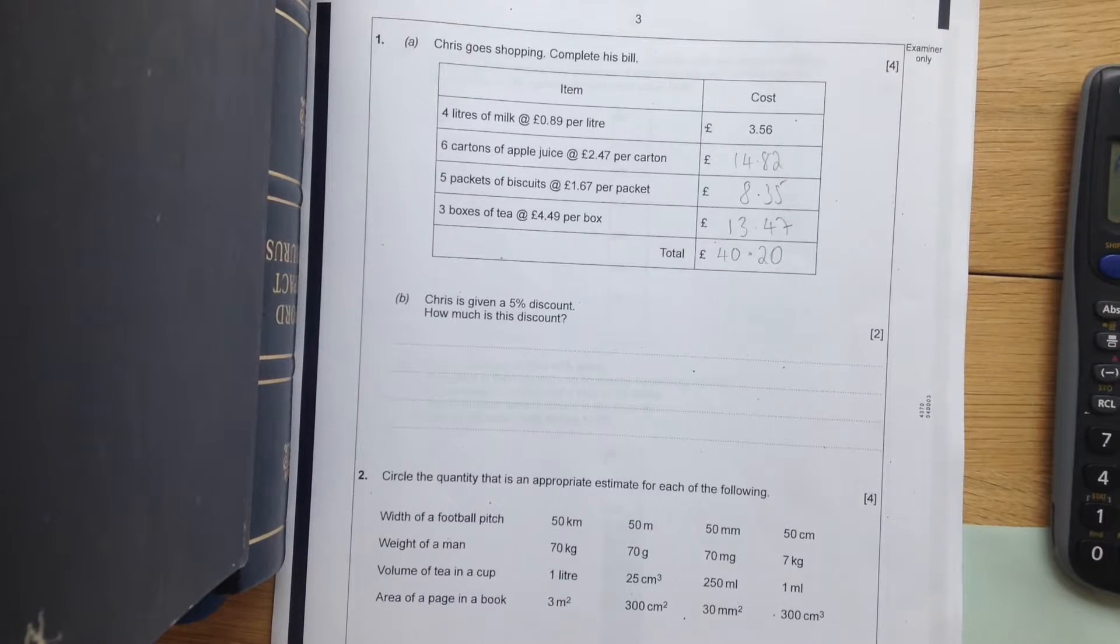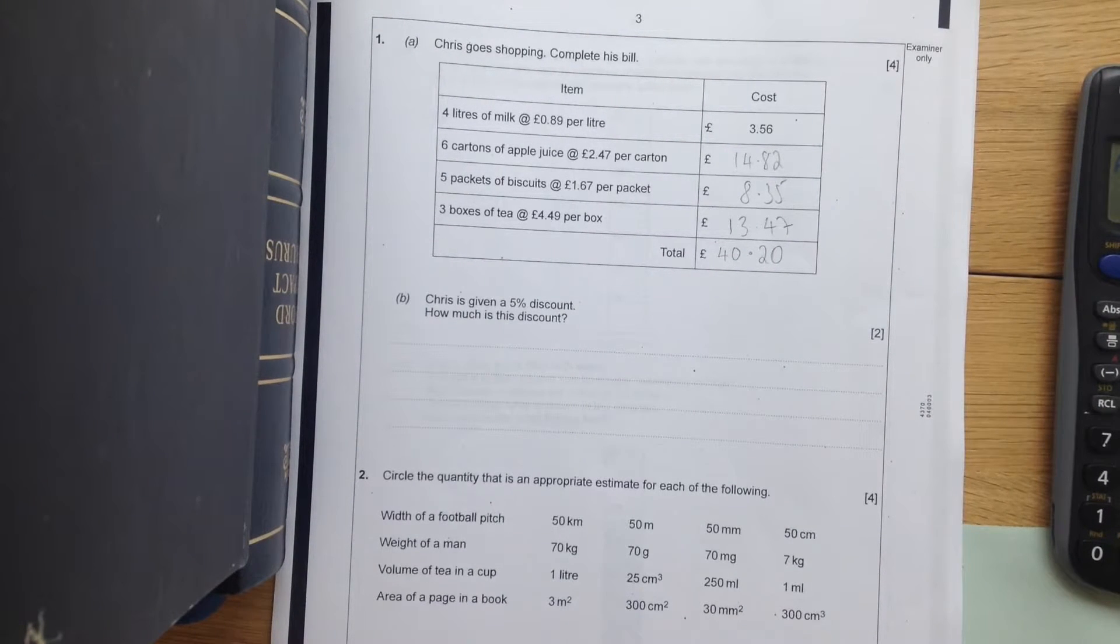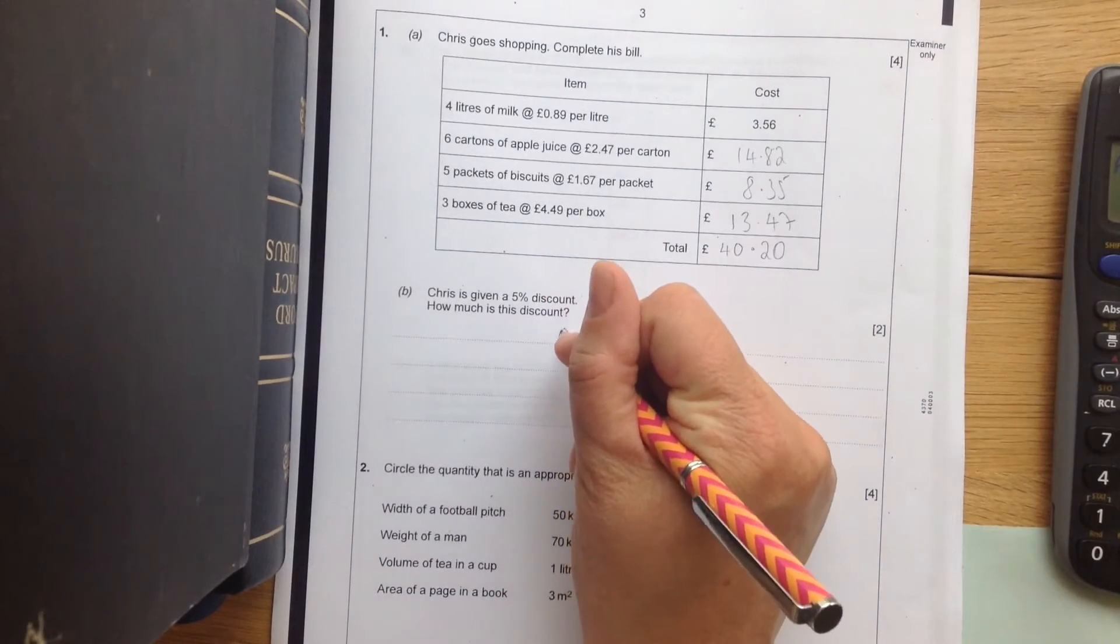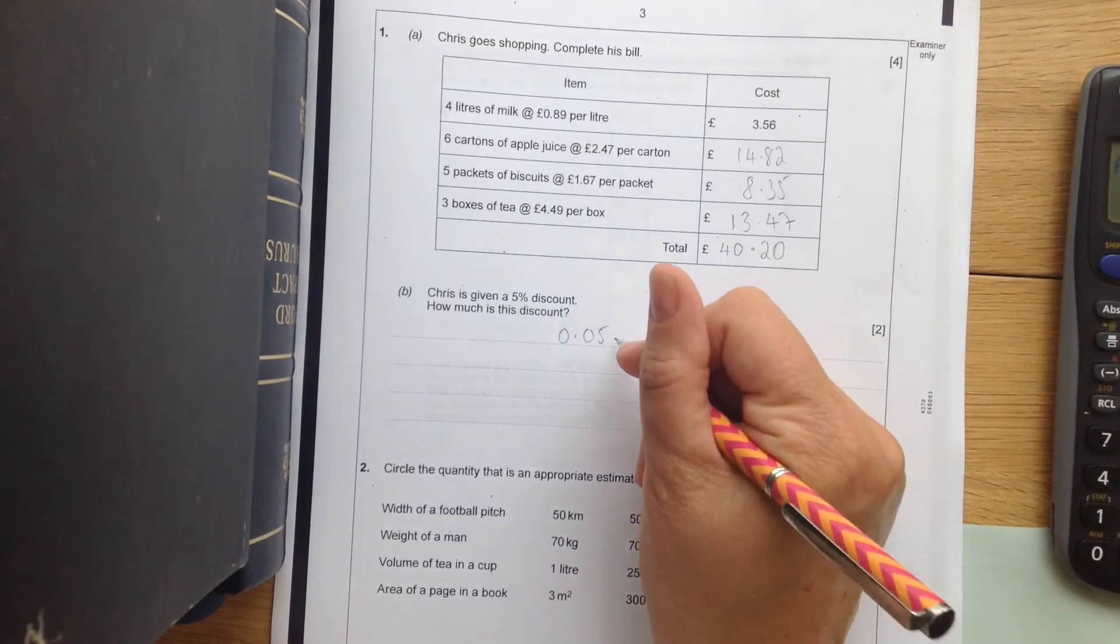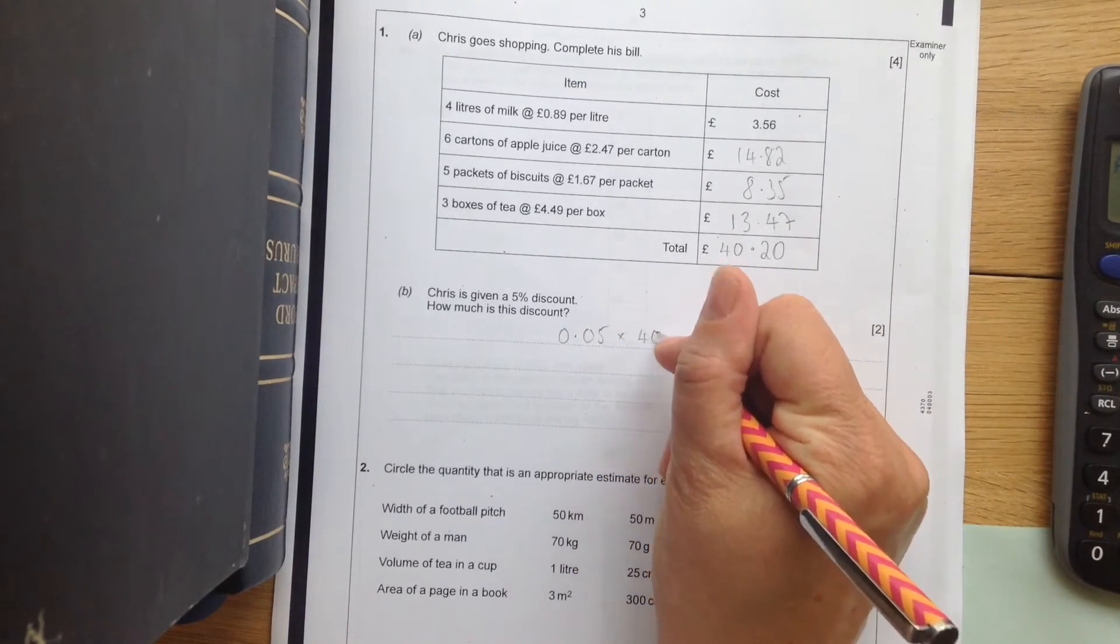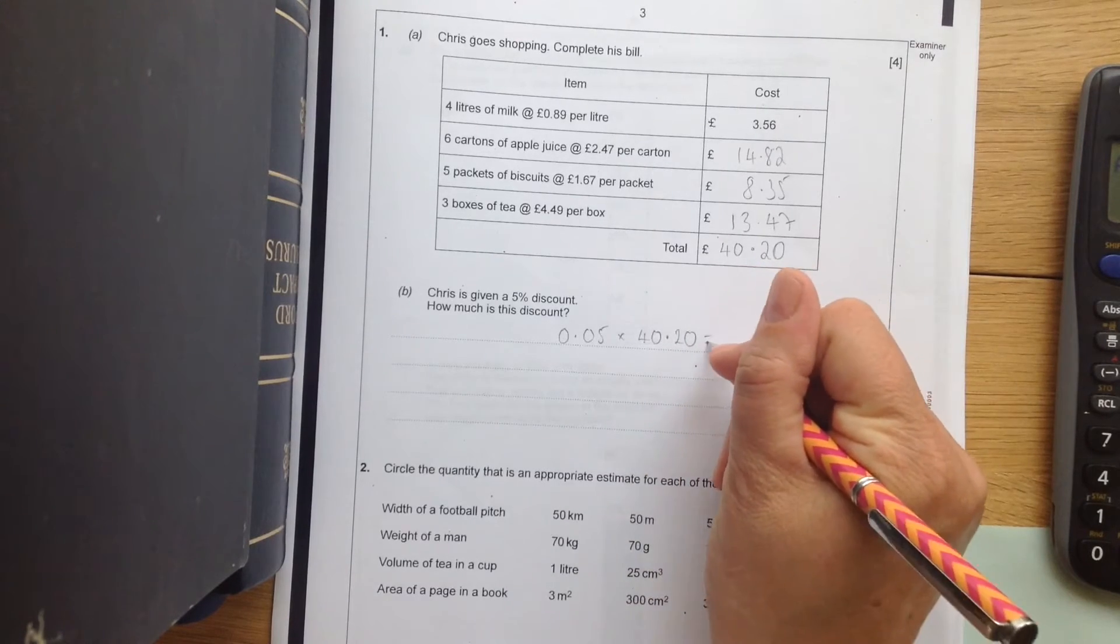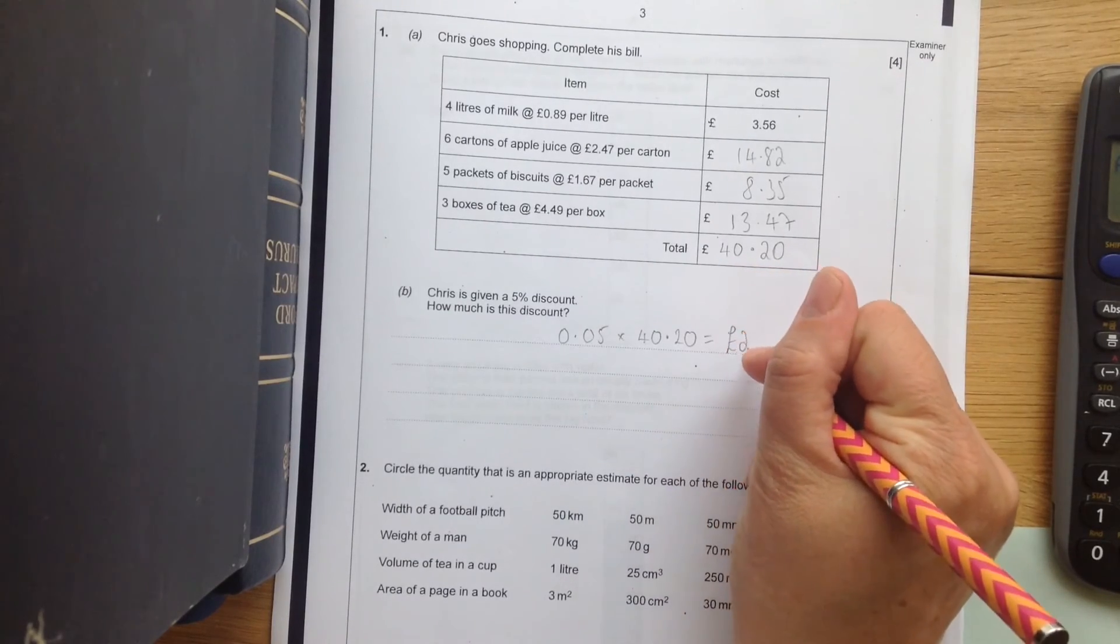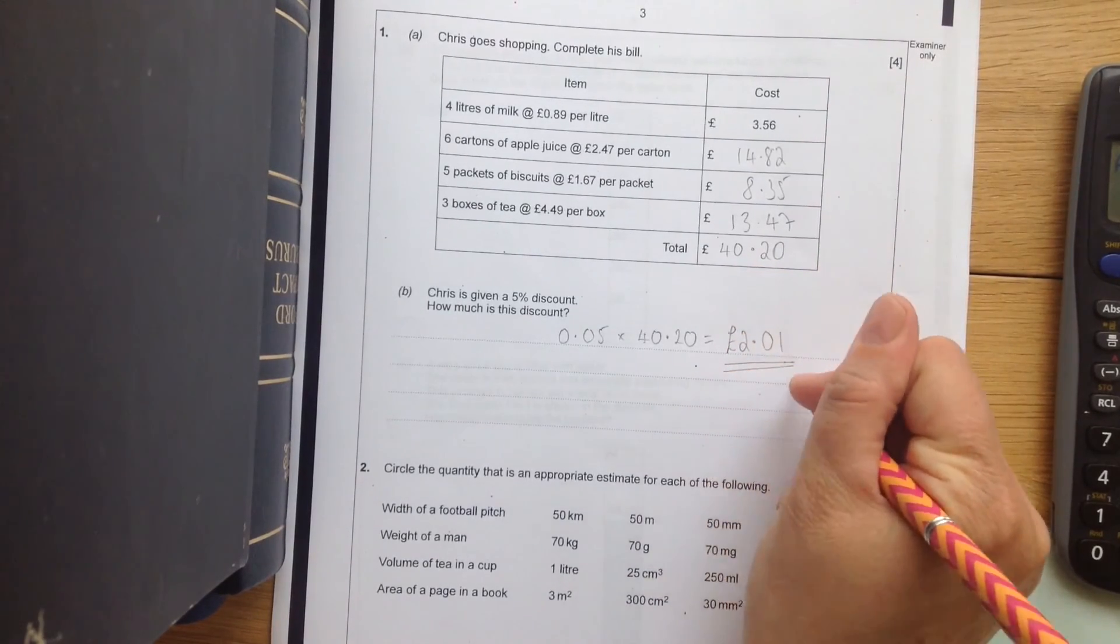Now it says Chris is given a five percent discount, how much is this discount? Okay, because it's a calculator paper I'm going to use my calculator method. I'm going to turn five percent into a decimal and multiply. So five percent as a decimal is nought point nought five multiplied by forty point two zero equals, and the answer is two pounds and one pence.